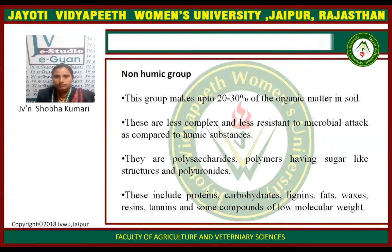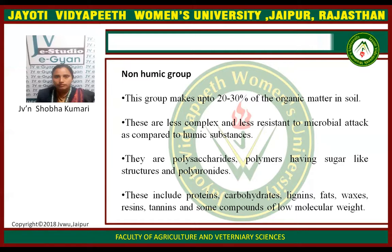The non-humic group makes up 20 to 30% of the organic matter in soil. These are less complex and less resistant to microbial attack compared to humic substances. They are polysaccharides — polymers having sugar-like structure — and polyuroids. These include proteins, carbohydrates, lignin, fatty acids, resins, and some compounds of low molecular weight.